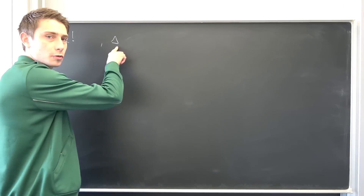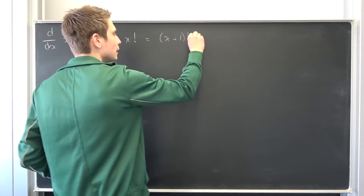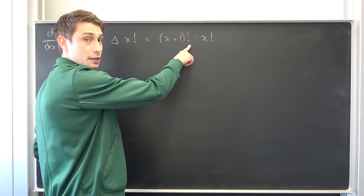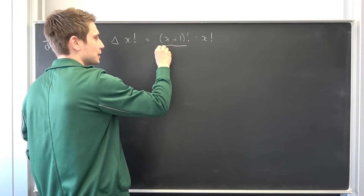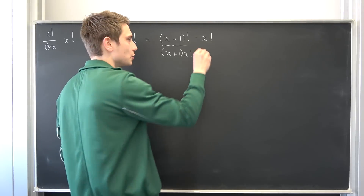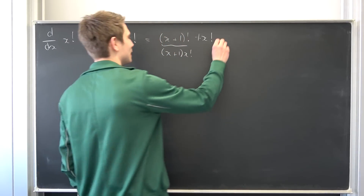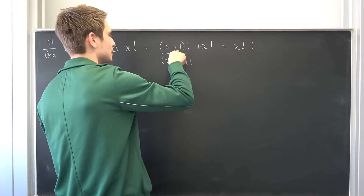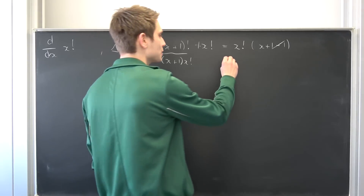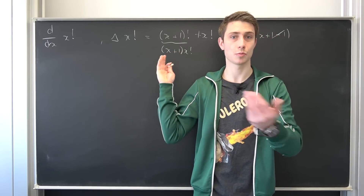For starters, we are going to start off with the finite difference of x factorial. This is nothing but (x+1)! minus x!. The factorial is defined recursively, so (x+1)! = (x+1)·x!, meaning we have x! as a common factor. Factoring it out leaves us with x!·(x+1−1), and those cancel, leaving x!·x. For natural numbers, this is a pretty good approximation.